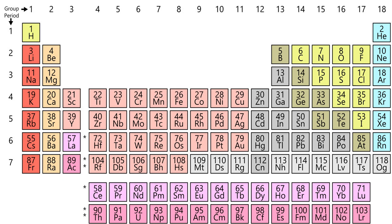The D block comprises groups 3 to 12, or 3B to 2B in American group numbering, and contains all of the transition metals. The F block, often offset below the rest of the periodic table, has no group numbers and comprises lanthanides and actinides.